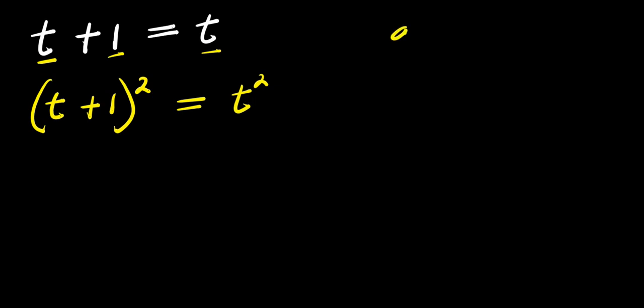Now if you have a plus b raised to the power of 2, this equals a squared plus 2ab plus b squared. And in this case our a equals t and b equals 1.